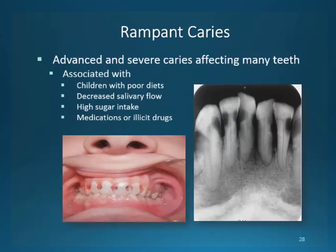Rampant decay is advanced to severe decay affecting children with poor diet. We also see decay in patients taking methamphetamines because of the lack of salivary flow that occurs from the use of the drug and the change in the pH of saliva. High sugar intake and medication can also bring about this situation. The elderly sometimes face this condition due to recession and medications that affect salivary flow, increasing the level of decay seen in elderly patients. Illicit drugs are also a contributing factor, though it does not appear on your handout.